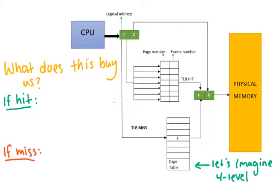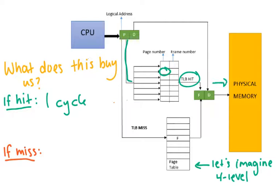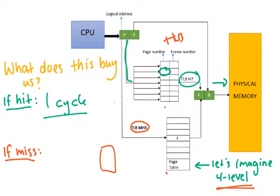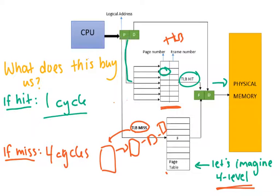Let's think of this in terms of cycles. If we have a hit — we come in and find the virtual address in the TLB — it just took us one cycle to get to physical memory. However, if we have a miss and we don't find it in the TLB, we need to go back down to the page table. Assuming a four-level page table, we have to index into the outer page table, then the next, then the next, then the next — so at the very least, we're going to have four cycles, not counting the cycle to look through the TLB. So there is a lot of speedup.